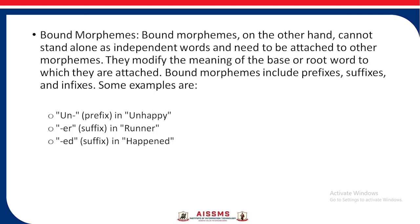Bound morphemes, on the other hand, cannot stand alone as independent words and need to be attached to another morpheme. They modify the meaning of the base or root word to which they are attached. Bound morphemes include prefixes, suffixes, and infixes. Some examples are: 'unhappy' where 'un' is a prefix, 'runner' where 'er' is a suffix, and 'happened' where 'ed' is a suffix.